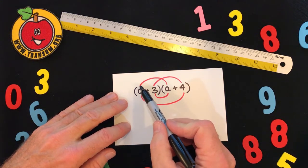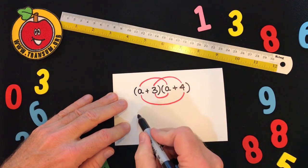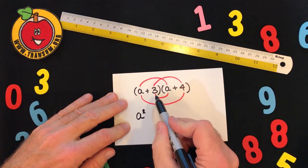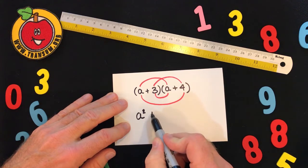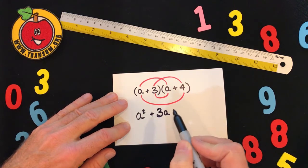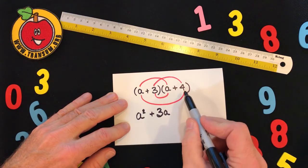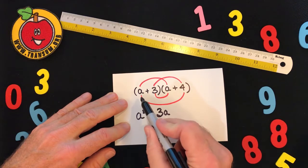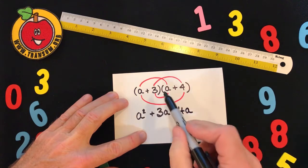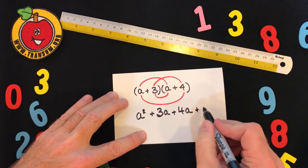Let's multiply along the left eyebrow first. A multiplied by A is A squared. Then the nose next: 3A. Then the mouth: 4 multiplied by A gives us 4A. And finally the right eyebrow, multiplying 3 by 4, gives us 12.